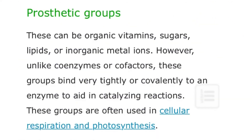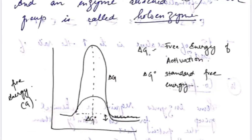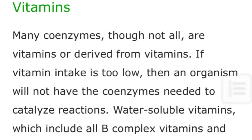Another term related to coenzyme is prosthetic group. If a coenzyme is very tightly or even covalently bound to the enzyme, it is called a prosthetic group. An enzyme attached to a prosthetic group is called a holoenzyme. A diagram showing delta G and delta G-naught has been drawn to illustrate this.